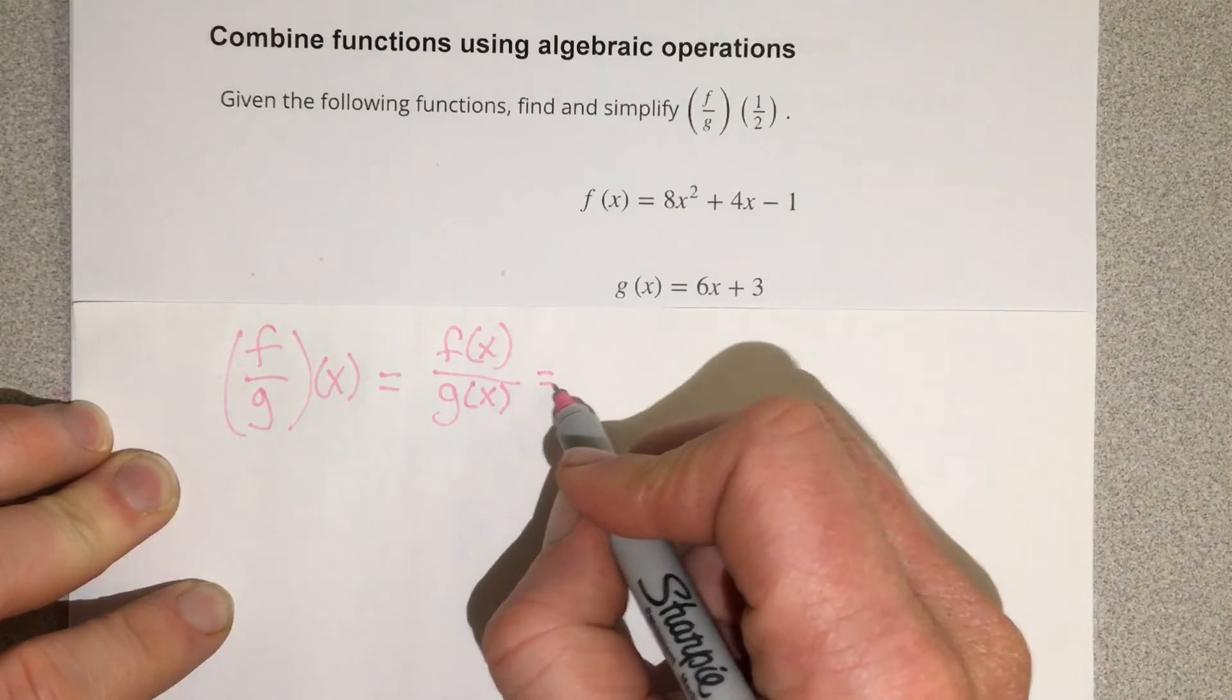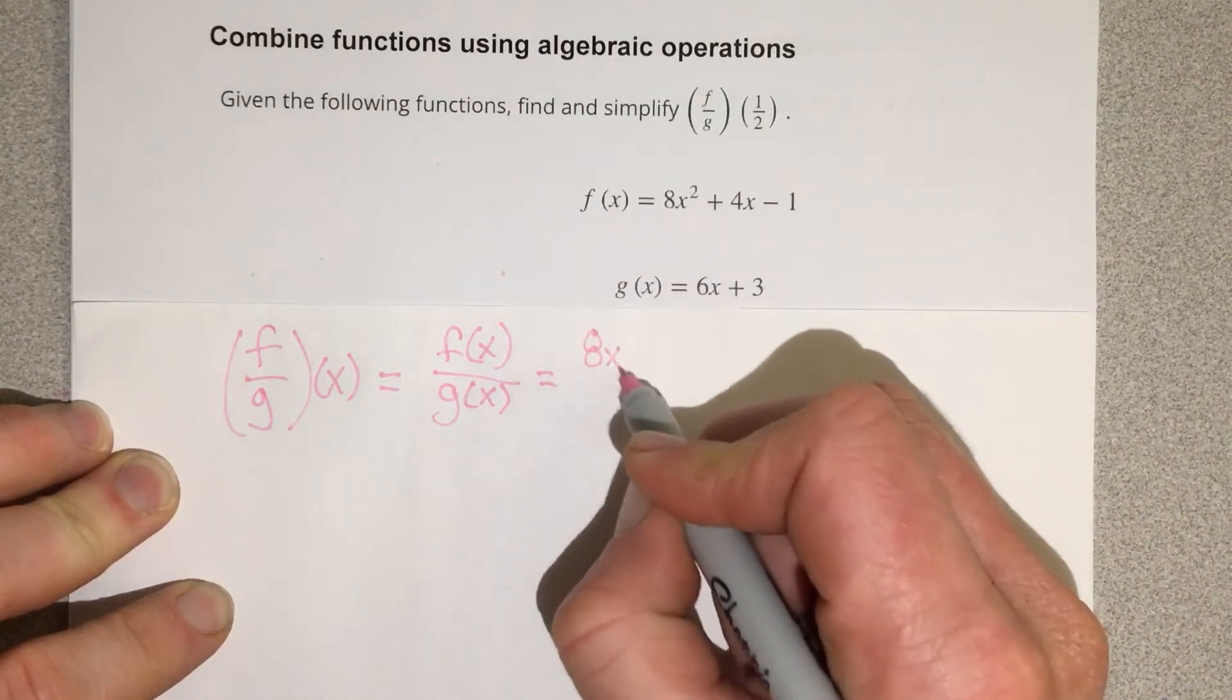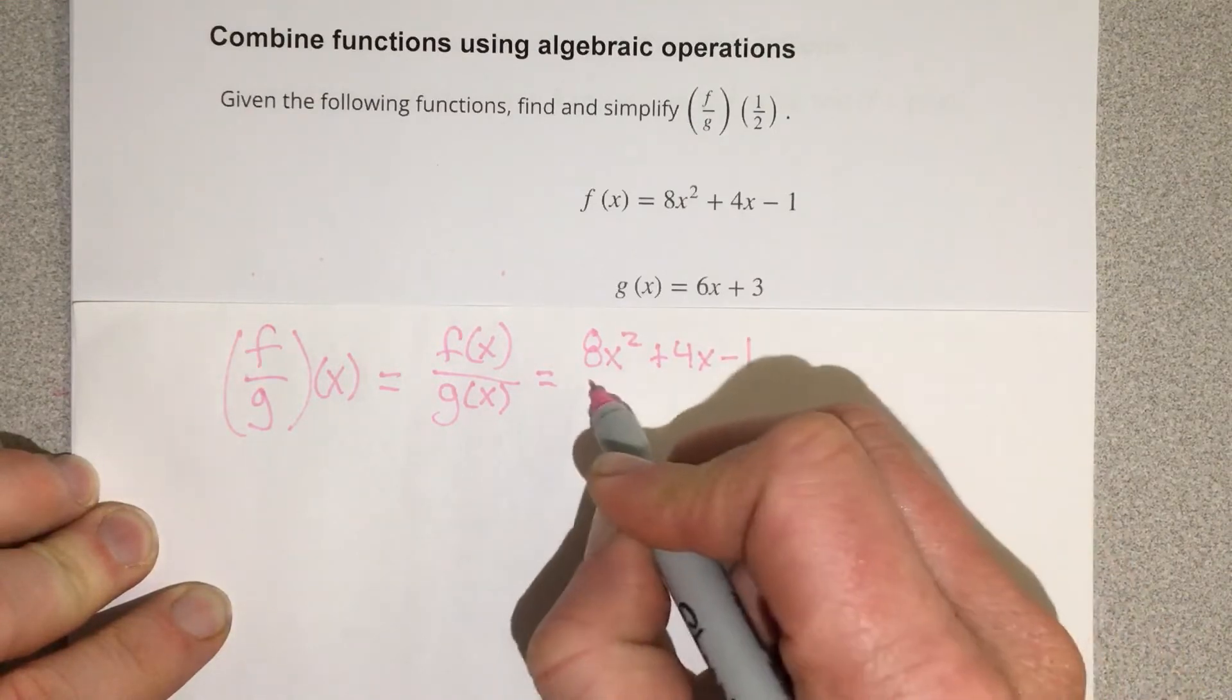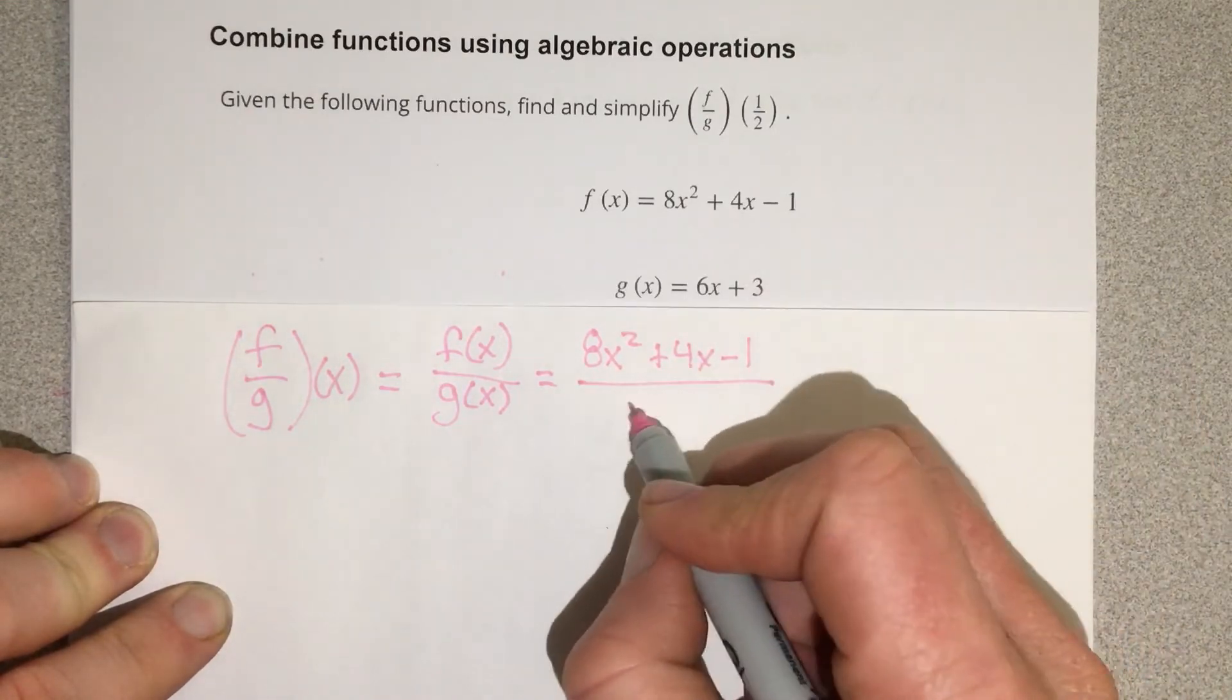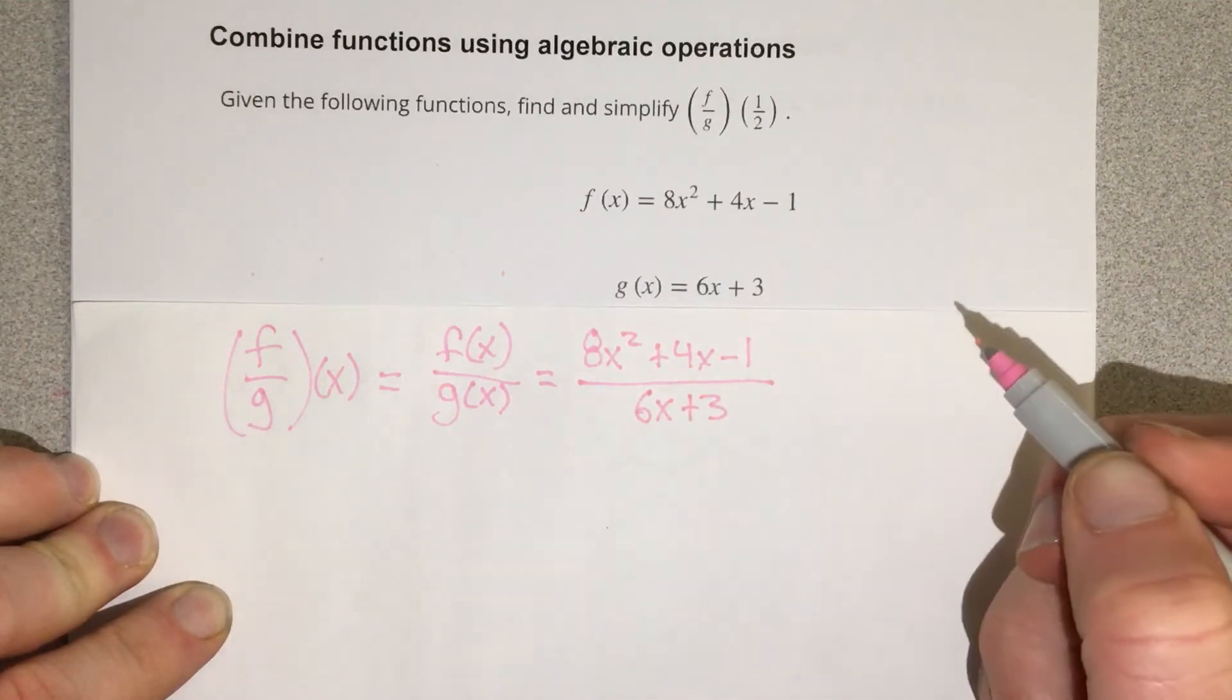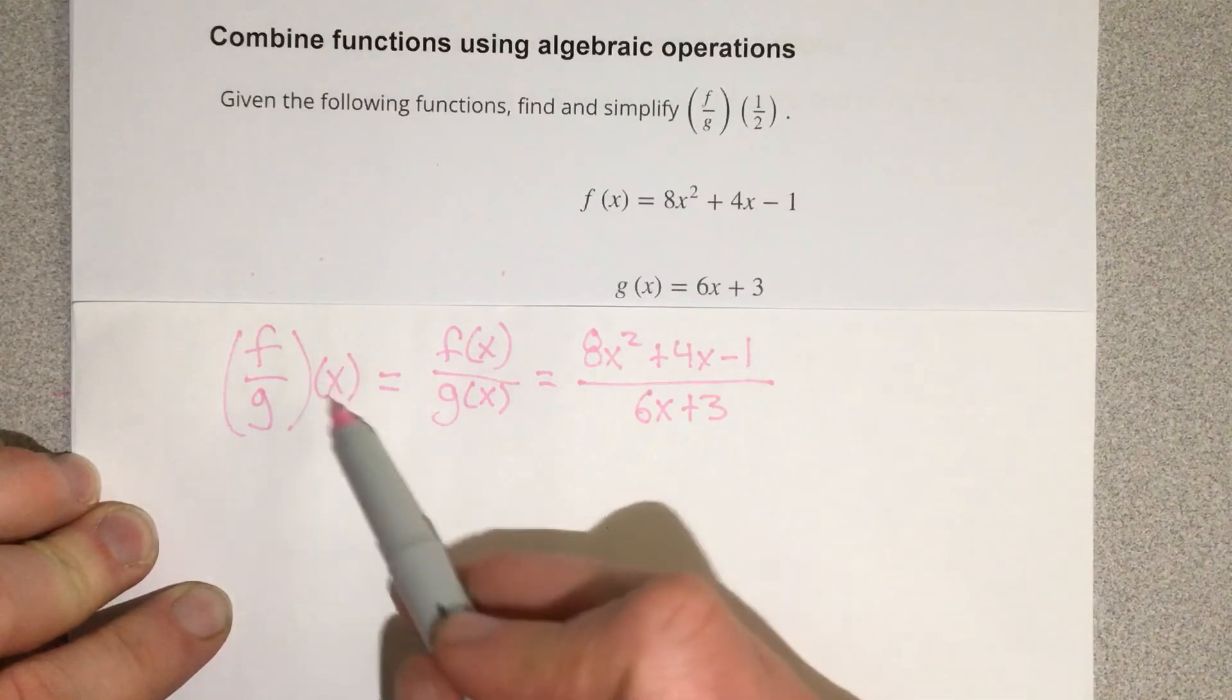Which is equal to f of x divided by g of x. And then I can just plug in each equation, so I have f of x, which is 8x squared plus 4x minus 1 divided by 6x plus 3, which is the g of x function. So this is the general equation for f divided by g of x.